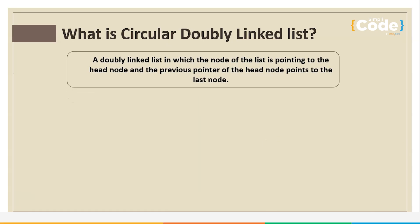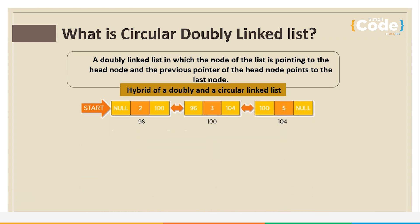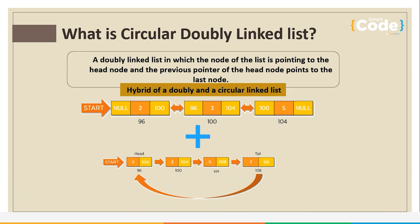Before getting into the execution part, let us quickly understand what a circular doubly linked list is. A circular doubly linked list is a more advanced version of a singly linked list or a doubly linked list, having the added features of both. You can say it is a hybrid of a doubly as well as a circular linked list.